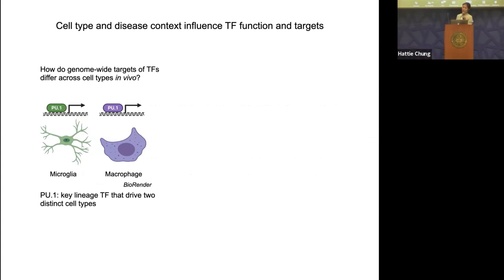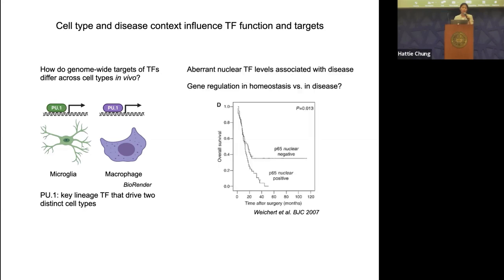One motivator is to understand how transcription factors may differentially target genome-wide expression in tissues in vivo, especially in a cell-type specific manner. PU.1 is a key lineage-specifying transcription factor critical for determining outcomes of microglia as well as macrophages. Although these are morphologically and functionally different cell types, they're regulated by the same master regulator — so it's important to study them in a cell-type specific way using single-cell technologies. Nuclear transcription factor levels are also used clinically to track disease progressions, especially in cancer.